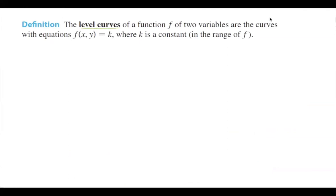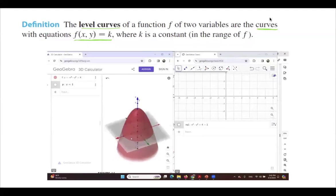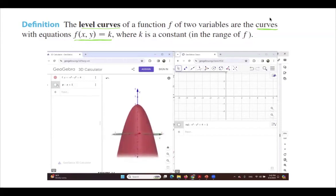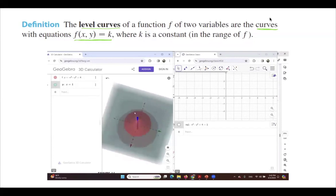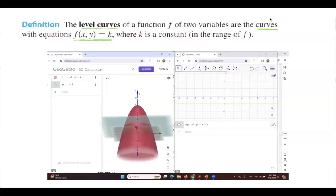The level curves of a function f of two variables are the curves in 2D obtained by setting the function equal to fixed z values. Let's take a look at this visualization. On the left-hand side, we have a three-dimensional object — an upside-down ball. f is equal to negative x squared minus y squared plus four. Now I set z equals to one. I have an intersection between the graph and this plane where z equals one. I just set the function equal to one and solved this in 2D.